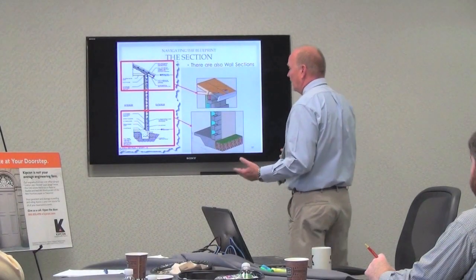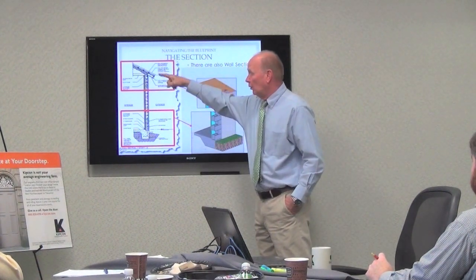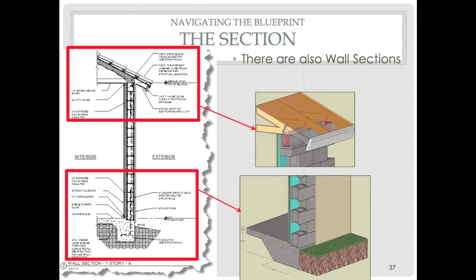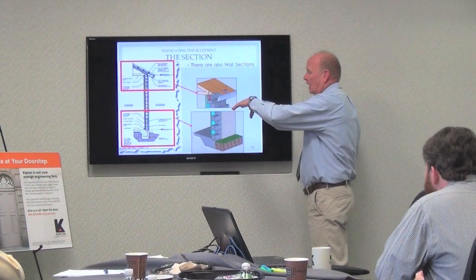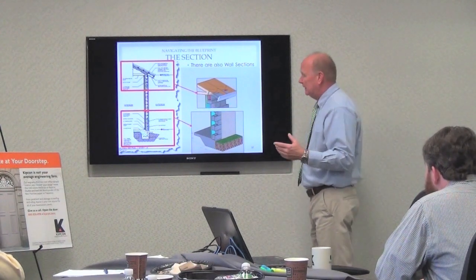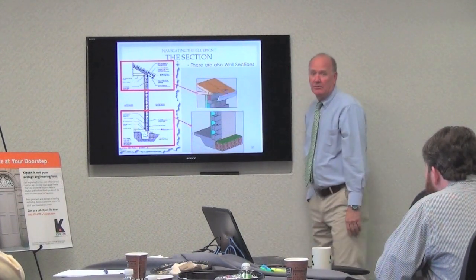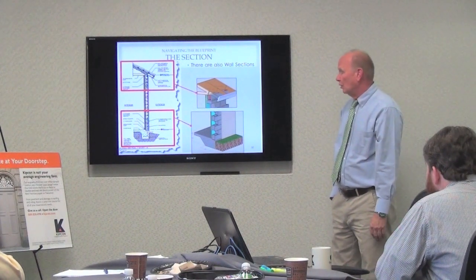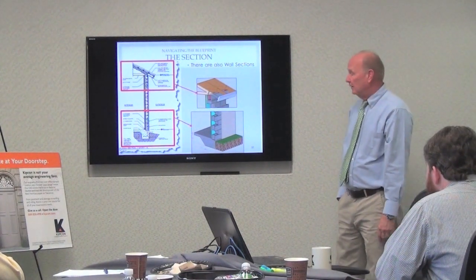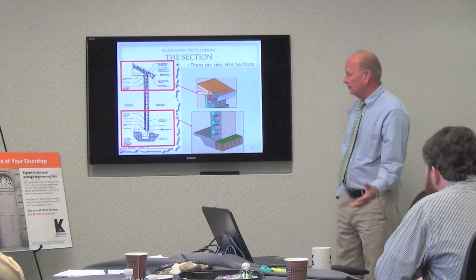A section doesn't have to be the whole building — it might be just a wall type or some area that needs a little more information. We might just slice it in half and that'll tell us exactly what that section is. This is where 3D drawings come in; you can see that this is a whole lot clearer in some ways, and I think we'll see more and more of that as the industry changes.